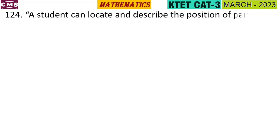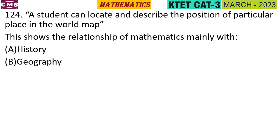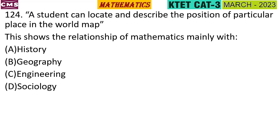Question 4: A student can locate and describe the position of a particular place in the world map. This shows the relationship of mathematics mainly with history, geography, engineering, or sociology. The answer is geography.